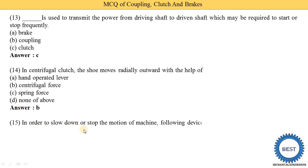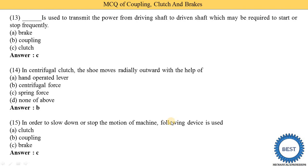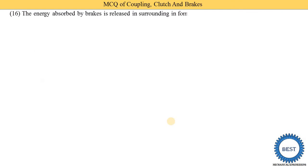In order to slow down or stop the motion of a machine, which device is used? As discussed in the first MCQ, the brake is used to stop the motion of vehicles or machines, or to reduce speed. Various options are given — clutch, coupling, and brake — and we know that brake is the correct answer.